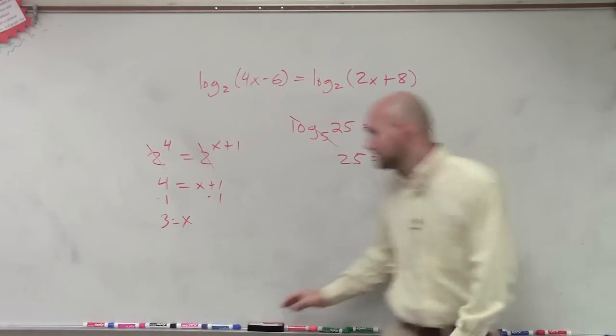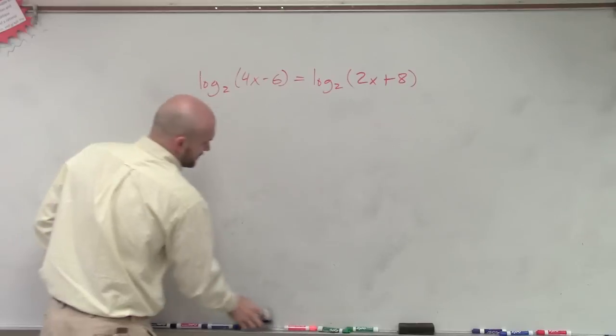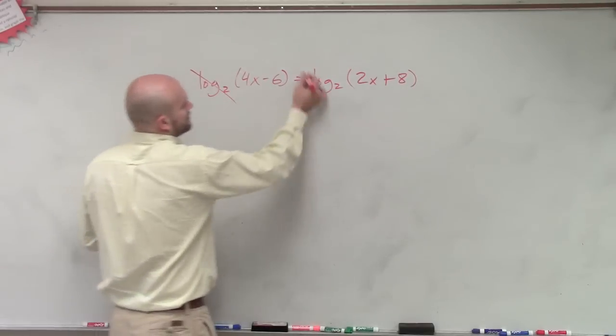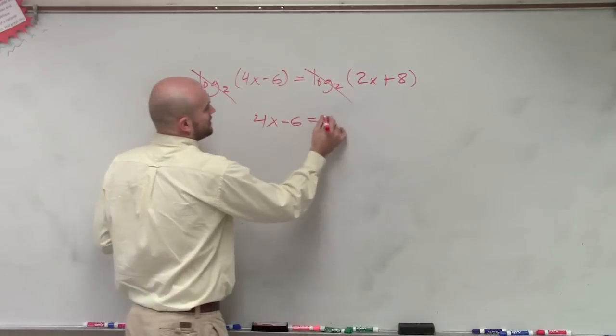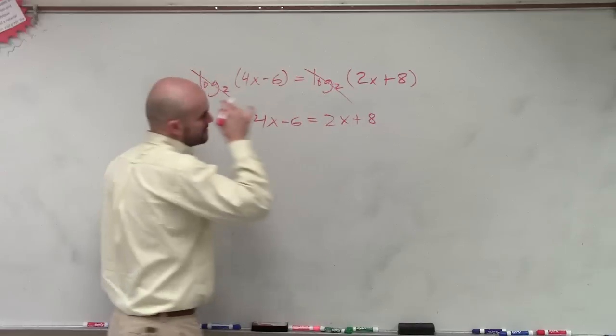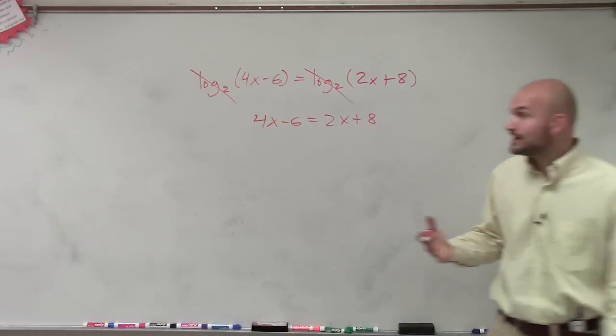We just know, to solve for x, we know that these have to equal each other. So what I'm going to do is forget about log base 2. They're not going to help me figure out x. So now I'm going to say 4x minus 6 equals 2x plus 8. Now I have two x's, but the thing is, those x's are linear, right?